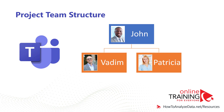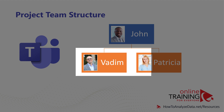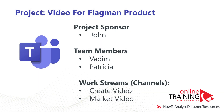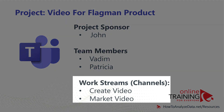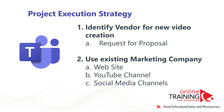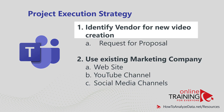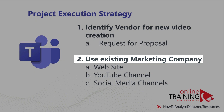We are working on the project together and using Microsoft Teams. Patricia is a team lead on the project and Vadim is the team member. Both Patricia and Vadim report to John. We've identified two main work streams for the project: the first one is to create the video, and the second one is to market the video. Our strategy is to find a new vendor to create the video and use an existing vendor to market the video.